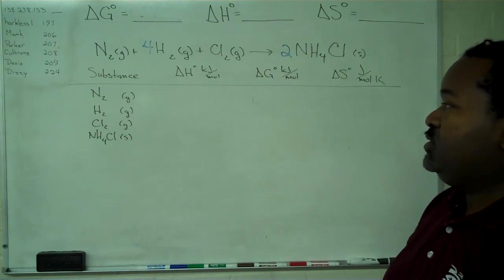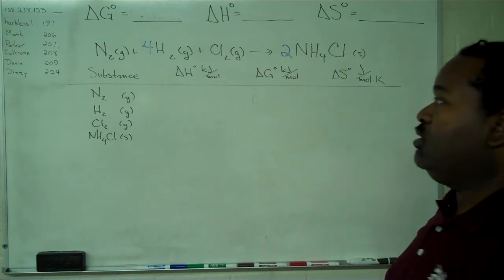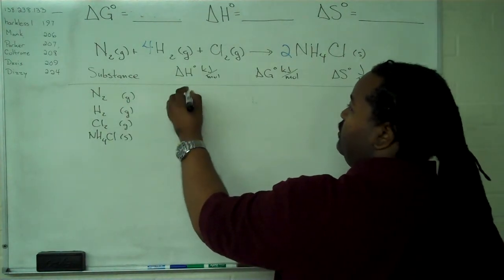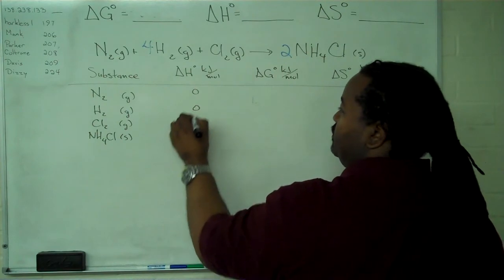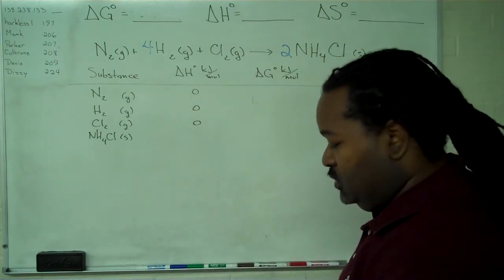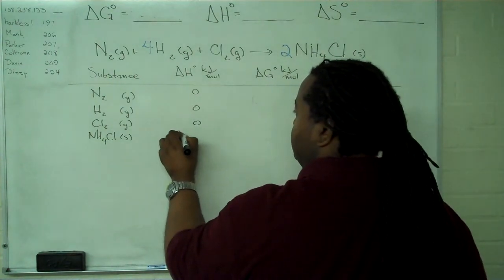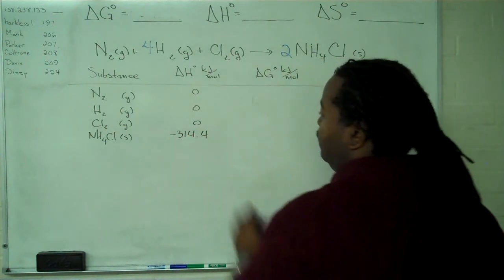The standard states of nitrogen, hydrogen, and chlorine are nitrogen, hydrogen, and chlorine gases. So the value for enthalpy will be zero in each case. The solid ammonium chloride will have a value in the data table, which is minus 314.4.